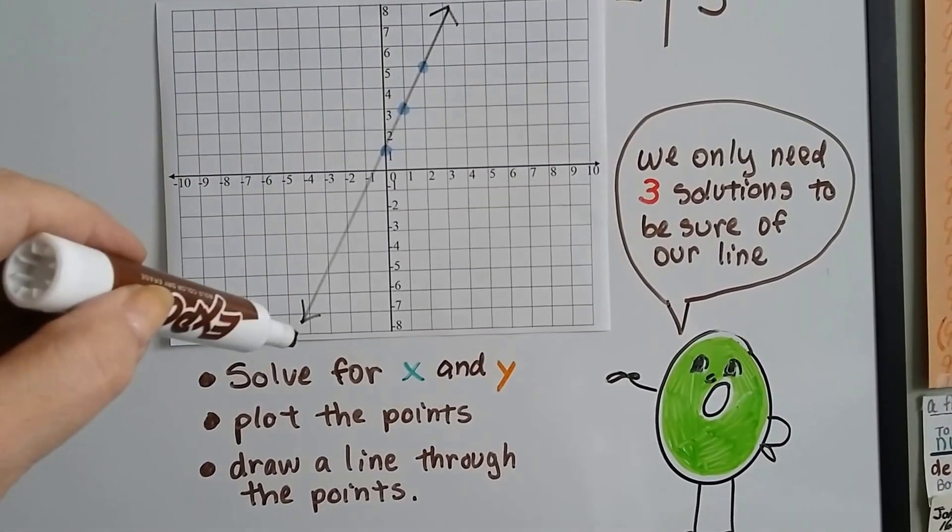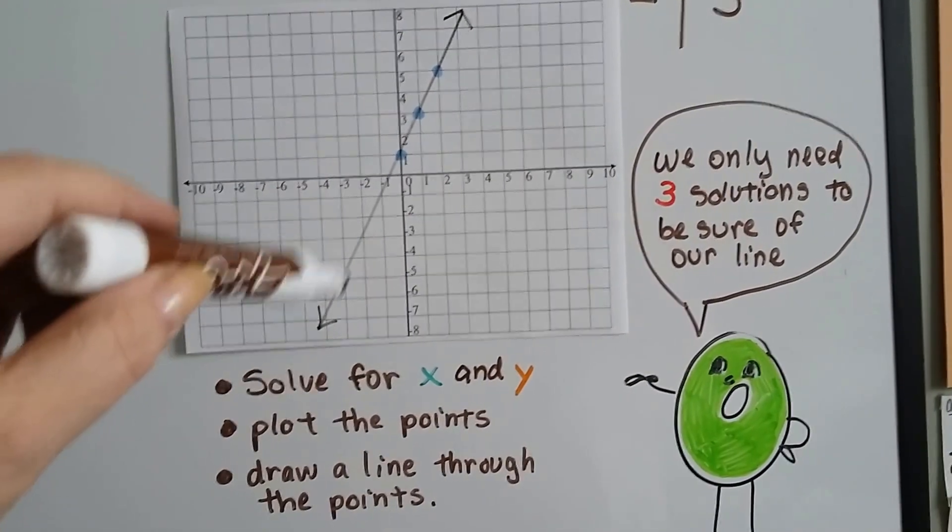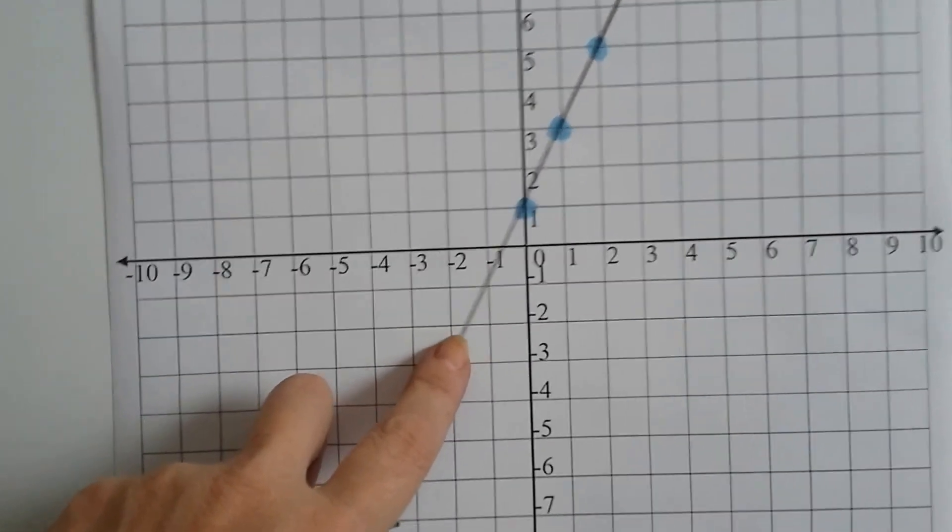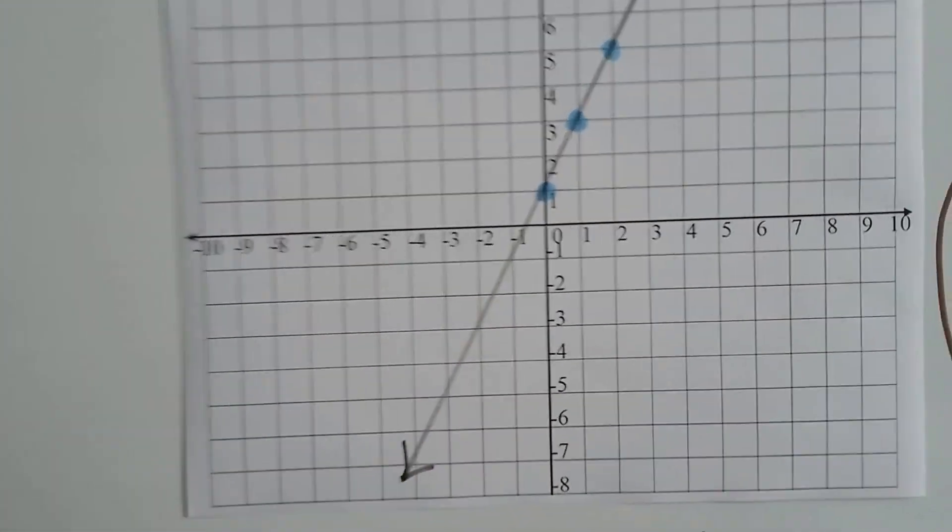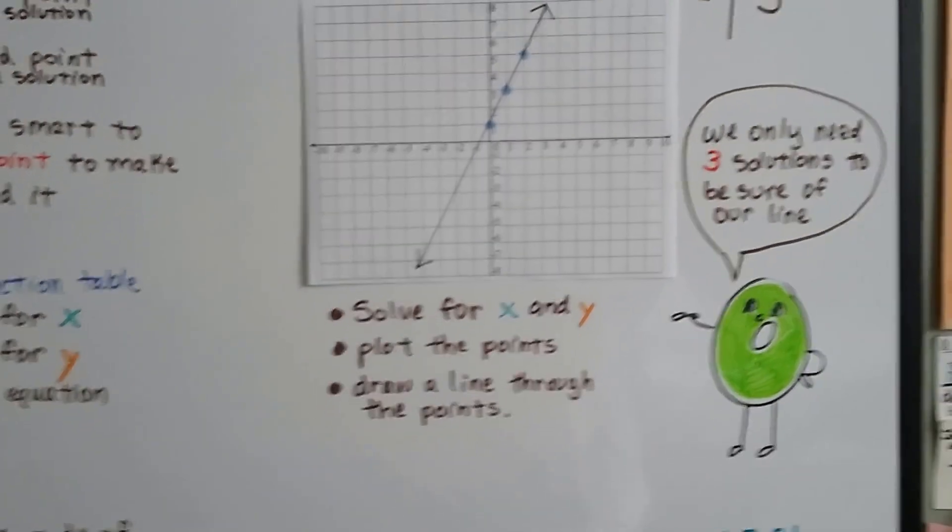Now we just need to draw a line through the points. So we get a ruler, we draw a line straight through it. And every single point on this line, whether it's an intersection or even in the middle, even some weird spot like right here, is a solution if we figure out what that spot's actual coordinates are.